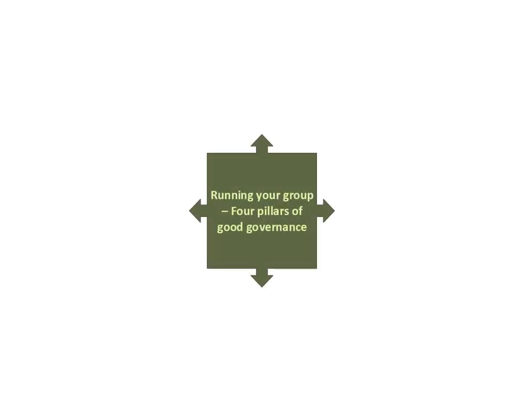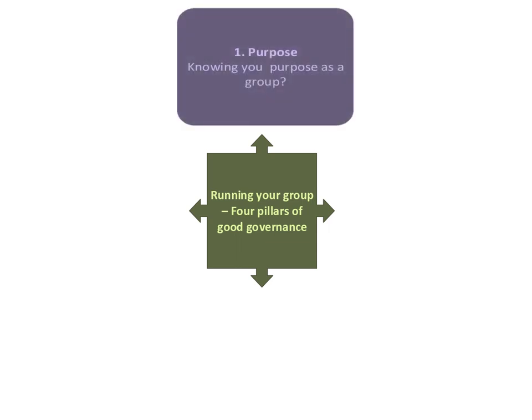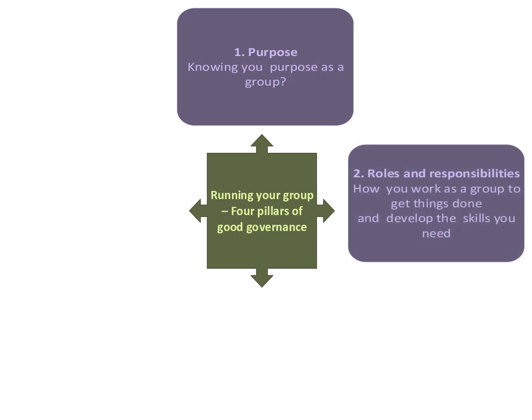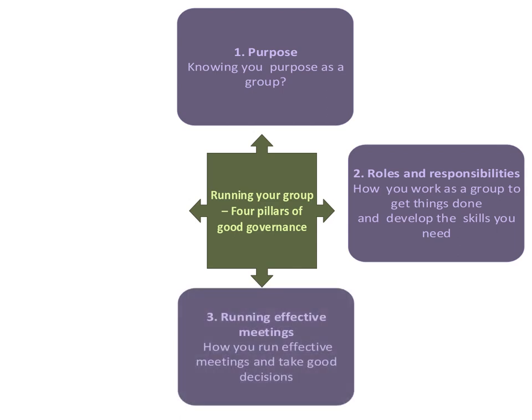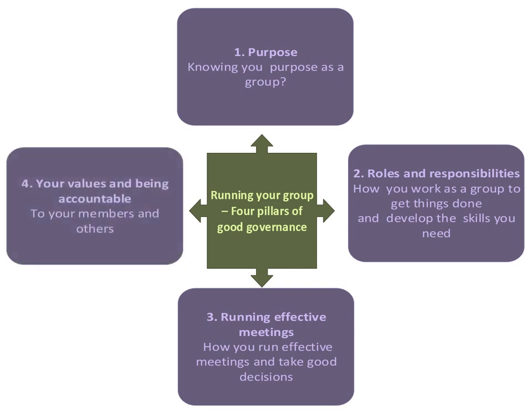We think it can be helpful to think about running your group in terms of four pillars of good governance. These are: that you know your purpose from the beginning and keep sight of it as your group develops; that you are clear about the roles and responsibilities within your organisation and how you work together to get things done and develop the skills you need to do it well; that you have effective meetings which are the core of your organisation, where you take good decisions based on good information having thought about all the options and consequences; and that you keep sight of your values and remain accountable to your members and other stakeholders, like your partners and funders.